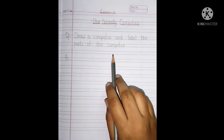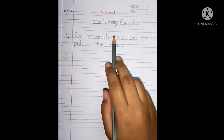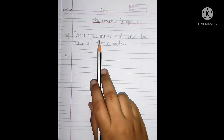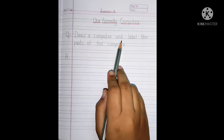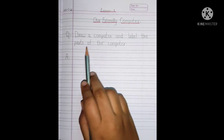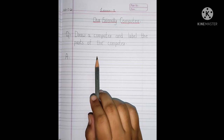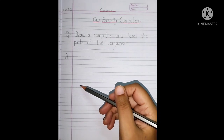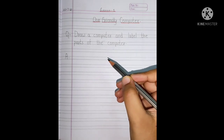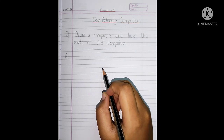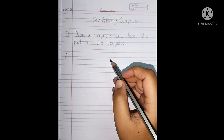And then, see this, children? This is your question in lesson number 1. Read the question, children. Draw a computer and label the parts of the computer. It says that we have to draw a diagram of the computer and also label the parts of the computer.